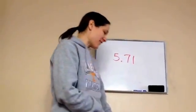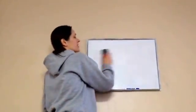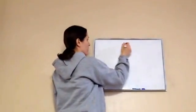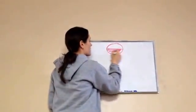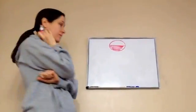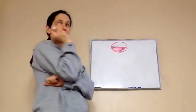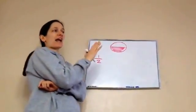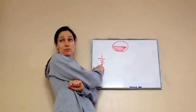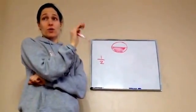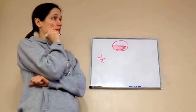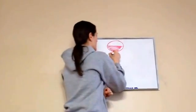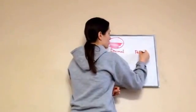Okay, fifth grade lesson 71. This one is on fractions, decimals, and percents, so you're going to learn something cool today. First thing I want you to do is draw this on your paper. I'm going to put three columns: fraction, decimal, and percent — those are the three things you're learning about today.